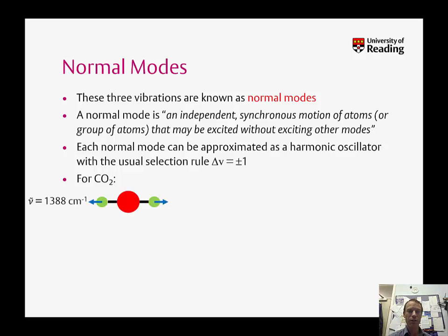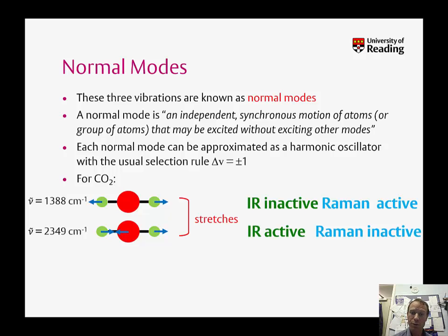Let's take CO2 as an example. It's a linear molecule, so we have 3n minus 5, and this gives us four vibrational modes. There are two stretches: a symmetric stretch and an asymmetric stretch. If we think about the symmetric stretch, as the CO bonds get longer, the dipole moment of the molecule doesn't change. So therefore this transition is infrared inactive.